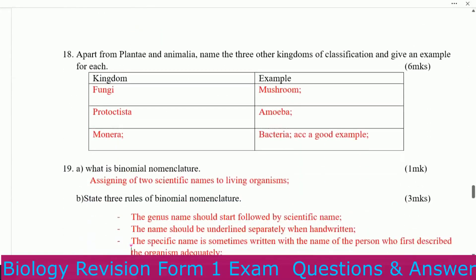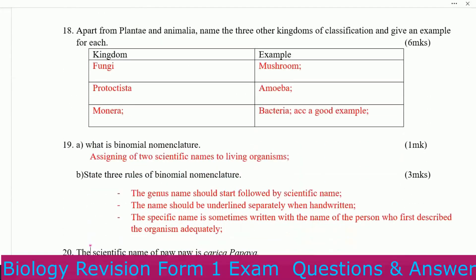Apart from Plantae and Animalia, name the three other kingdoms of classification and give an example for each. Fungi — example: mushroom. Protista — example: Amoeba. Monera — example: bacteria.